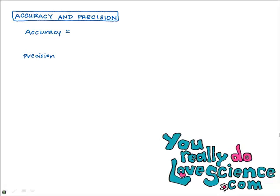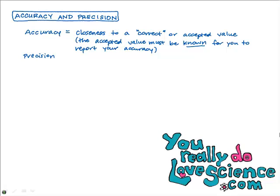Accuracy tells how close your measurement is to the correct or accepted value. So let's write down this definition: accuracy is closeness to a correct or accepted value, and the accepted value must be known for you to report on your accuracy. For example, if you're doing a lab measuring the mass and volume of a metal to calculate its density, you can't report on the accuracy of your density calculations unless your teacher tells you the accepted value for the density of that metal. Then you can compare and say whether your measurement was accurate or not. So it's really about being right or wrong — that's accuracy.